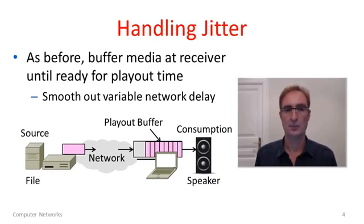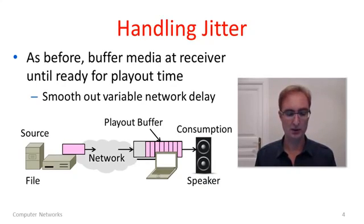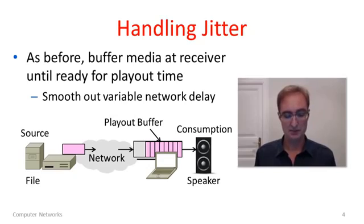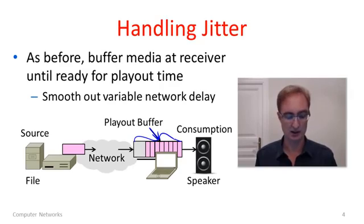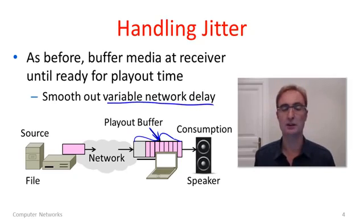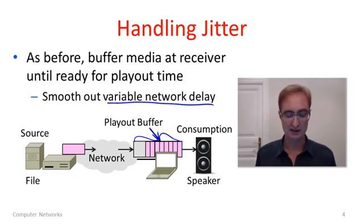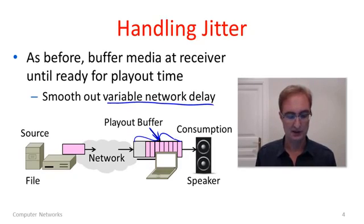As with the interactive case, the hardest thing to handle is the delay — and here the key component is not so much the delay itself, but the jitter. As in the interactive VoIP case, the solution to handle variation in network delay is to use a playout buffer. When media arrives at the receiver, we put it in the playout buffer until it's playout time so that we can play it out at a constant rate. This buffering smooths out the variation in network delay.